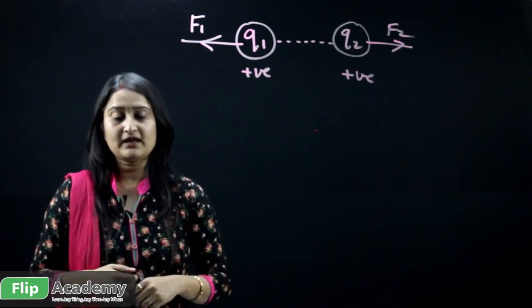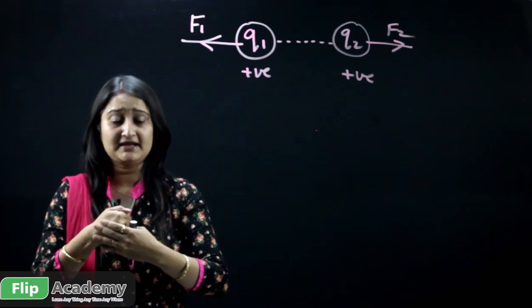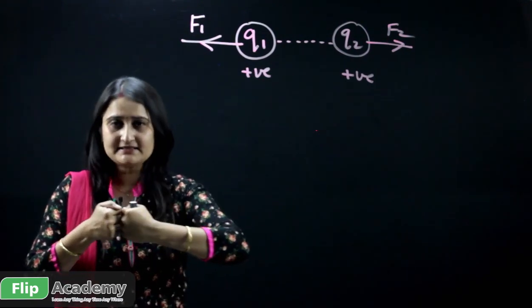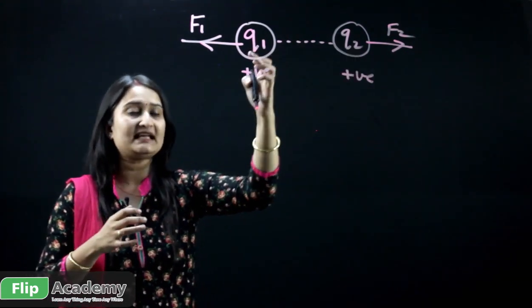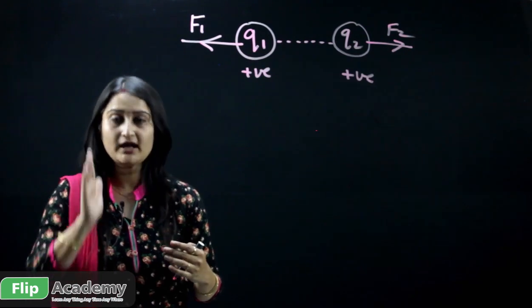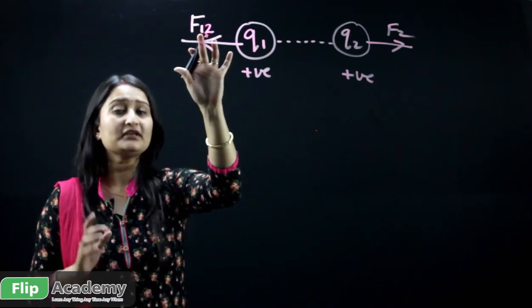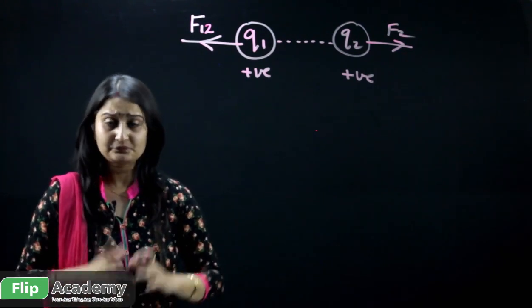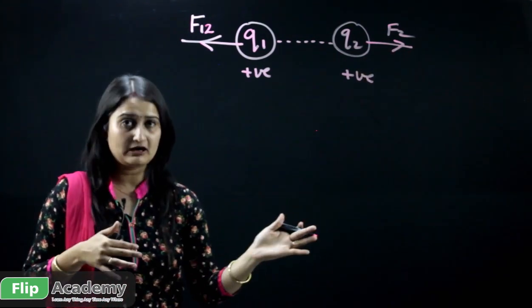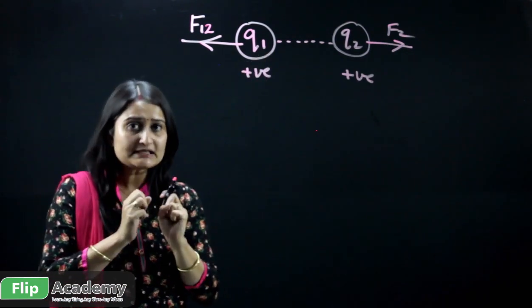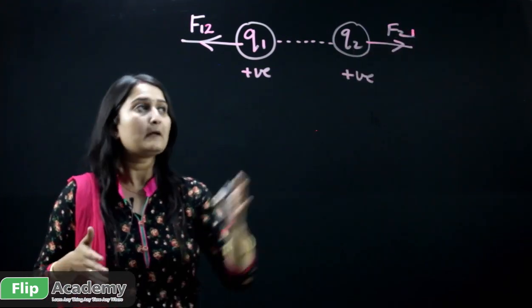The force exerted on Q1, let's call it F1 — this is the force exerted by Q2. Think of it like two hands: if one hand pushes the other, that hand experiences a force. Q1 is moving because Q2 is exerting pressure in the direction of F1. F1 means the force exerted on Q1 by charge Q2. Likewise, Q2 is moving apart due to Q1 — that force is F2, the force on Q2 by Q1.